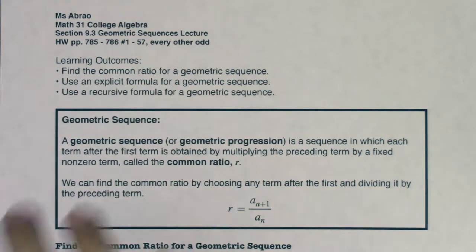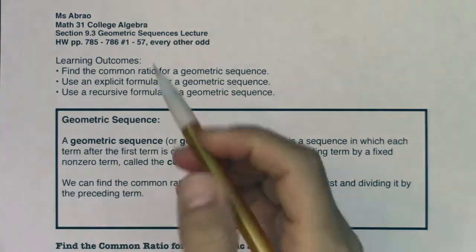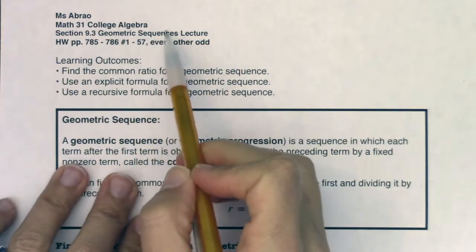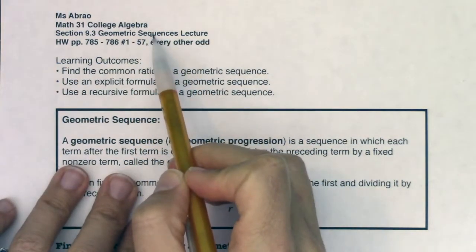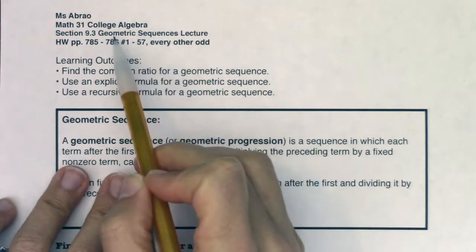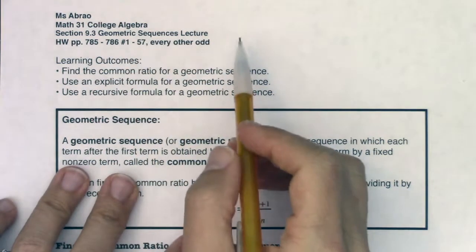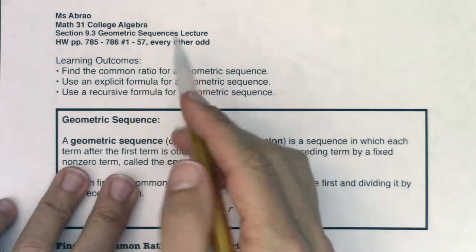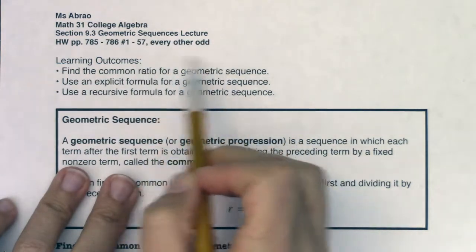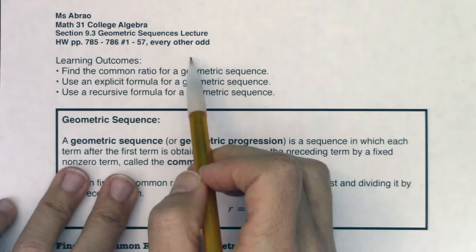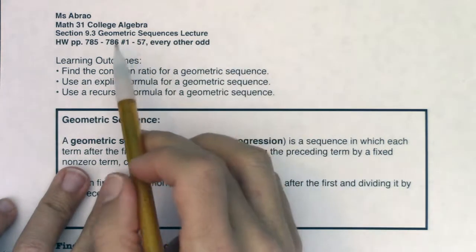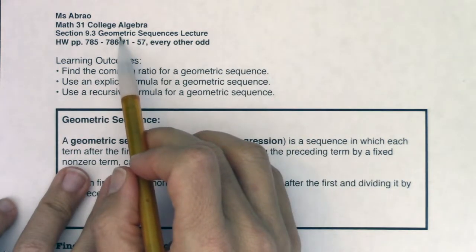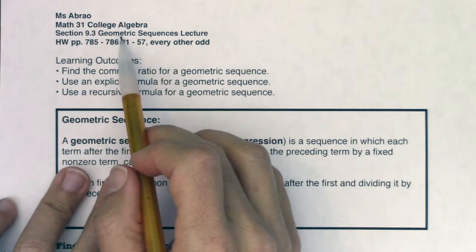Hey, Mount 31. Welcome to section 9.3, where we're going to learn about geometric sequences. So when you hear geometric sequence, we're still making a list of numbers, but rather than arithmetic, they're going to be geometric. In section 9.2, we did arithmetic sequences, and that's when I either added or subtracted a common difference to get from one term to the next. With geometric sequences, rather than adding or subtracting a common difference, we're going to multiply or divide by something we refer to as a common ratio.